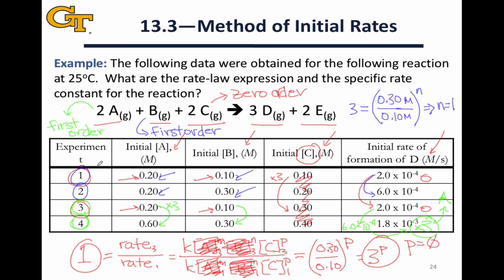If this last bit is a little bit confusing, I would encourage you to go through this process systematically of writing out the ratio of the rate laws for trials 3 and 4, plugging in what you know from our previous work, namely that B is first order and C is zero order, and figuring out the order of A that way. That more systematic approach will show you how we arrived at first order for reactant A.